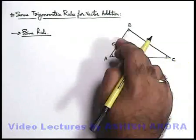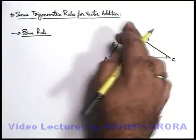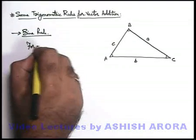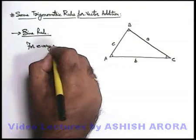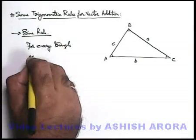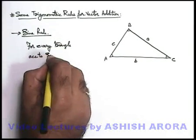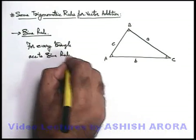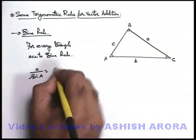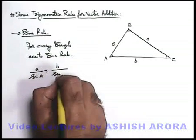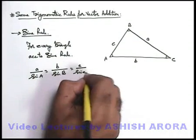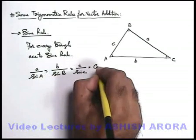Now these sides and the angles are related by a trigonometric rule which we write as, for every triangle, according to sine rule we write: a upon sine A is equal to b upon sine B is equal to c upon sine C, and this ratio remains constant.